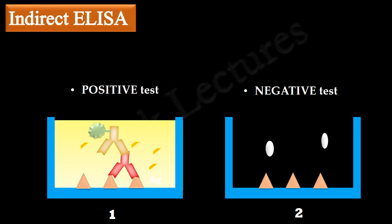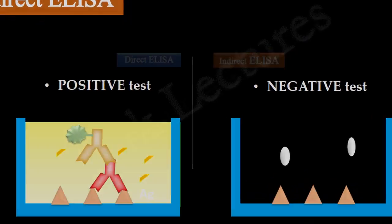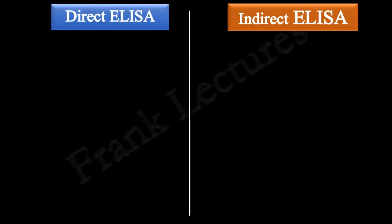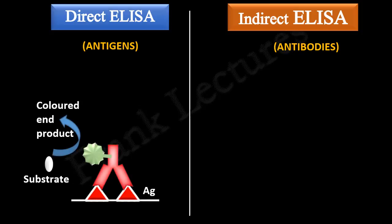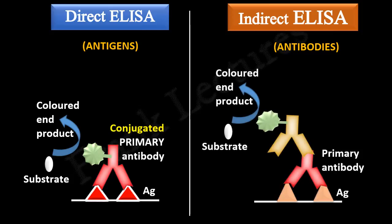This was indirect ELISA. Let us quickly recall and compare direct and indirect ELISA. Direct ELISA is used for the detection of antigens, while indirect ELISA is used for the detection of antibodies. In direct ELISA, the enzyme is conjugated to the primary antibody. In indirect ELISA, the enzyme is conjugated to the secondary antibody.